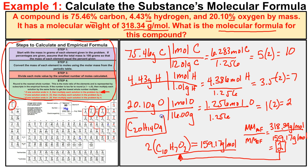There are a lot of steps here, so I recommend going back, pausing, and rewinding to make sure you understand what we did. First we calculated the empirical formula C10H7O2. Then we found the molar mass of that empirical formula. The question gave us the molar mass of the molecular formula, so we divided the molecular formula's molar mass by the empirical formula's molar mass to get the magic number of 2 — this is always a whole number. Distribute that throughout the empirical formula to get your final molecular formula.